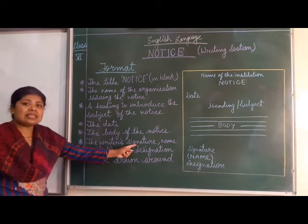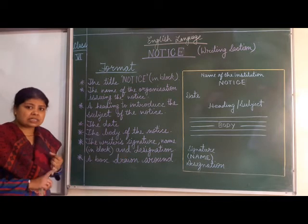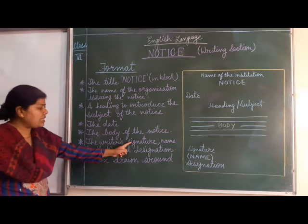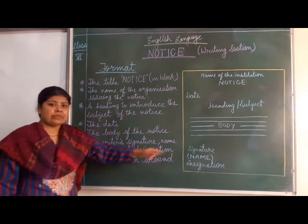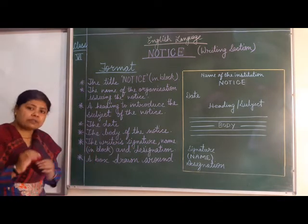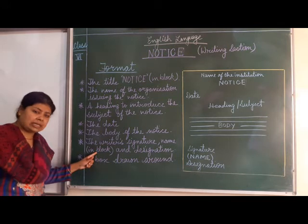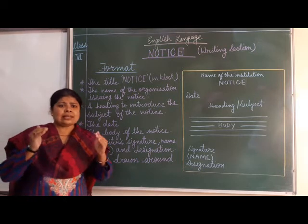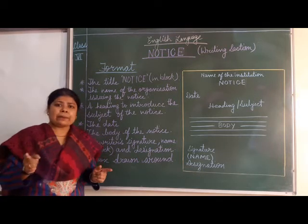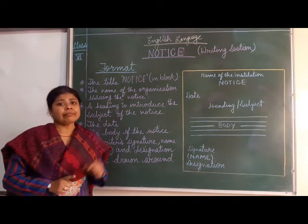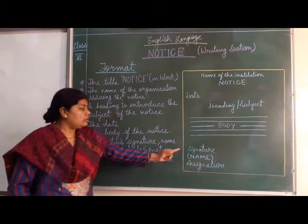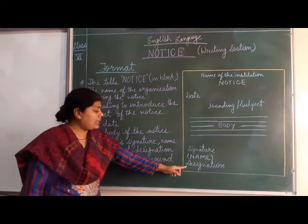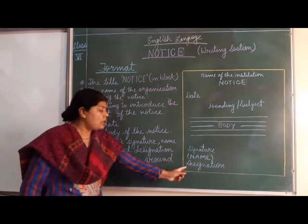Then the writer's signature. The signature of the authority who is releasing the notice comes first. Then the name — just beneath the signature, the name of the person who has signed, written in block letters again. And below that is the designation. For example, if the principal is issuing the notice, then first the signature of the principal, then the name of the principal in block letters, and then the designation — principal — written.